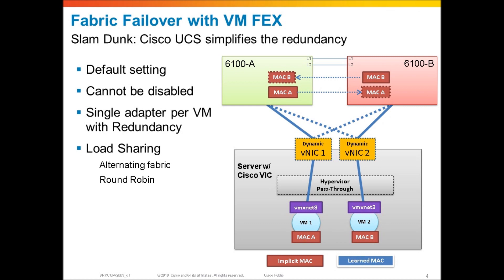It is the hypervisor pass-through, and even moving into the future, how this solution will evolve is a complete hypervisor bypass where you'll still have the same VMXNet3 driver on the VM, but it will completely bypass the hypervisor and land into the UCS virtual infrastructure of virtual cables, connecting directly to the 6100A or B. That is Fabric Failover with VMware, and this has been possible since UCS Manager version 1.1.